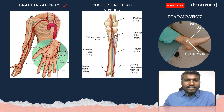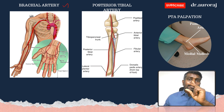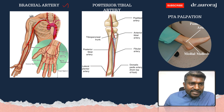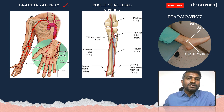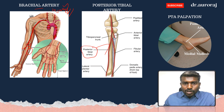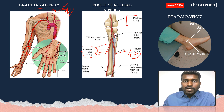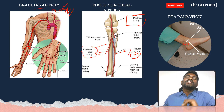The brachial artery runs down to the cubital fossa, and at the radial neck it divides into the radial artery and ulnar artery. If the arm is pulseless, suspect brachial artery injury. The popliteal artery is behind the knee; palpation on the medial part of the foot assesses the posterior tibial artery.